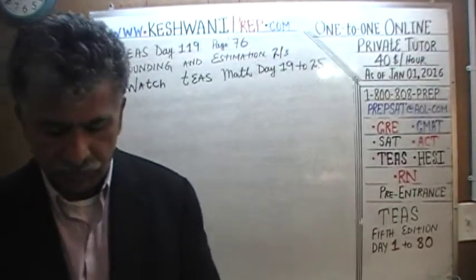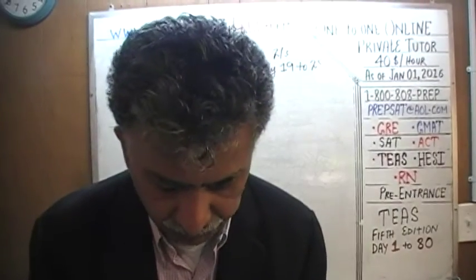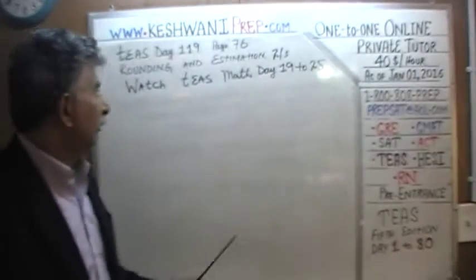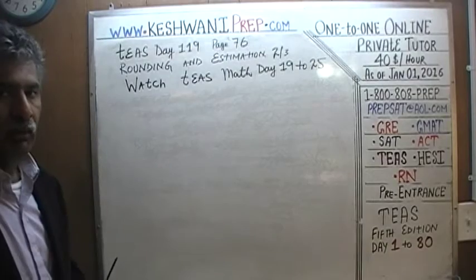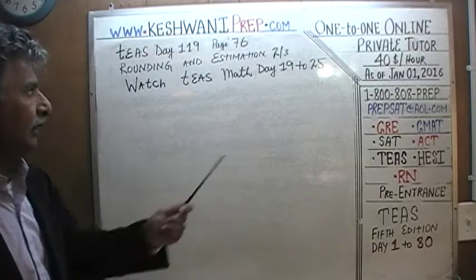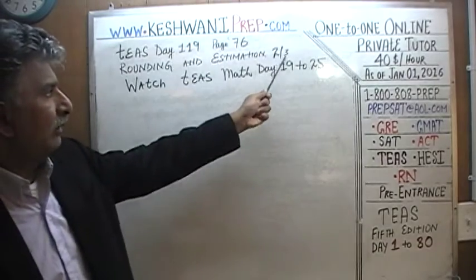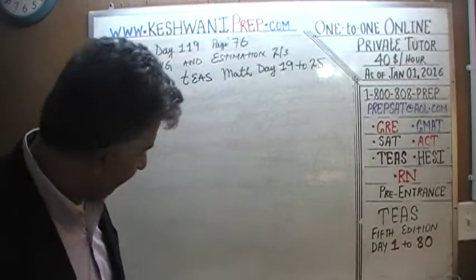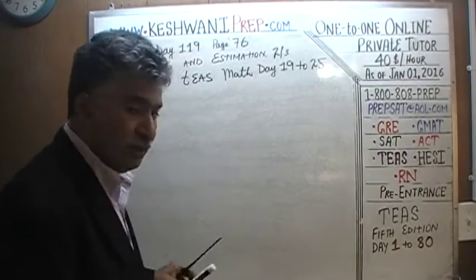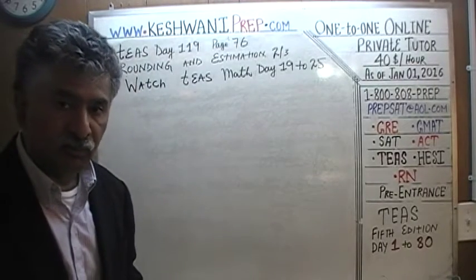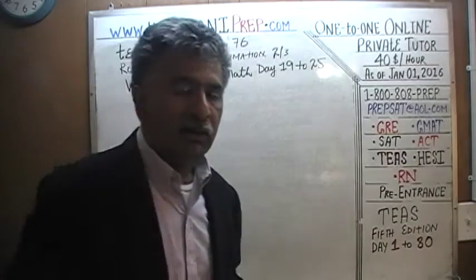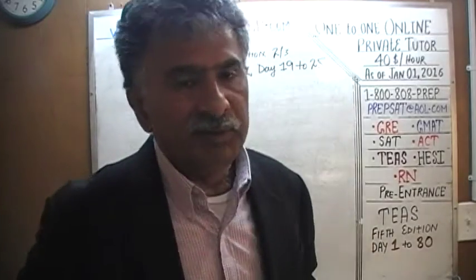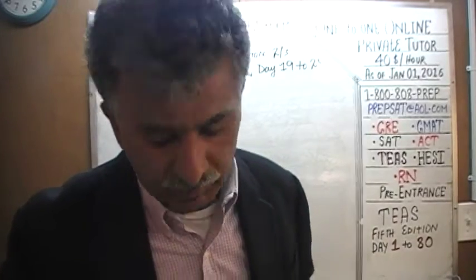Today we will continue with the topic that we began yesterday, dealing with the notion of rounding and estimation — how do we go about rounding and estimating? This is the second part of the three-part series. Before we actually start doing some of the problems, let's first talk about the concept of different digits and what they are called in a given number.